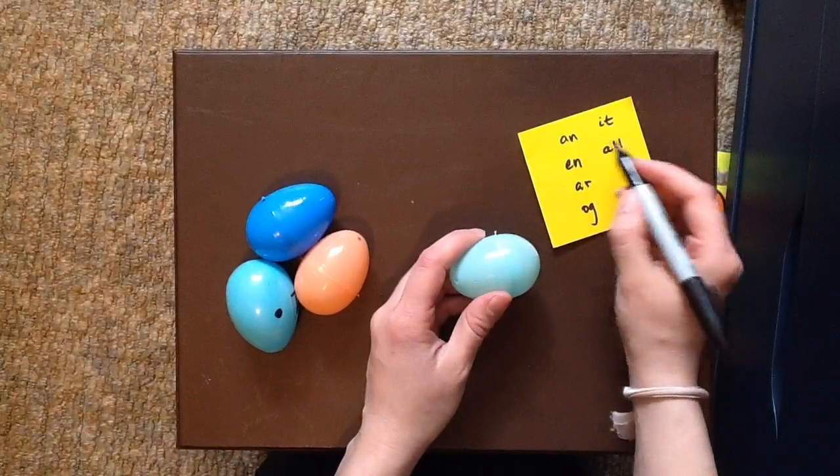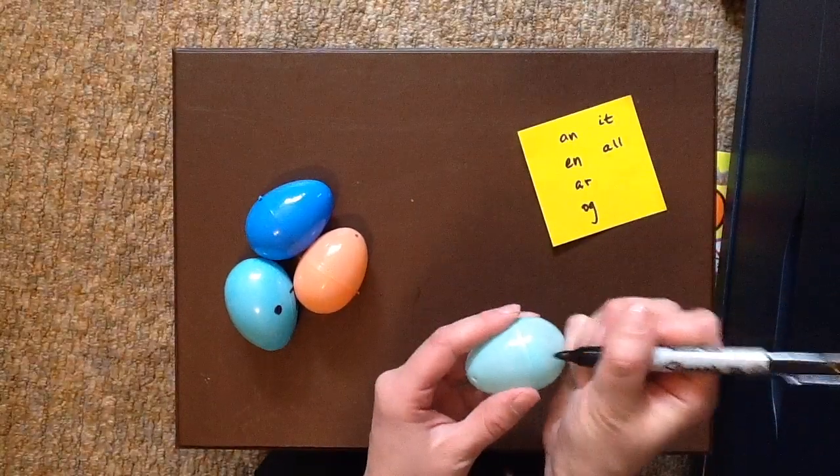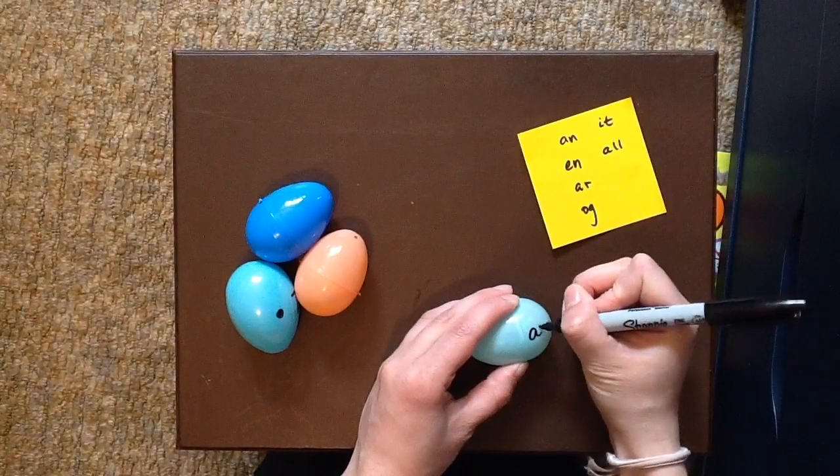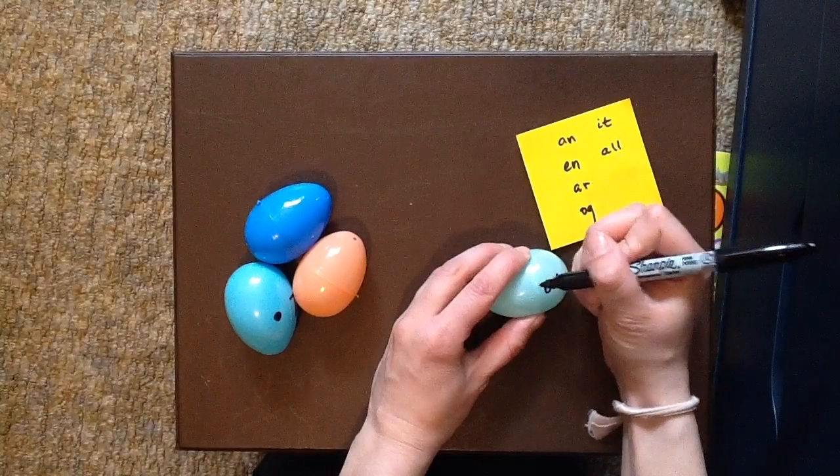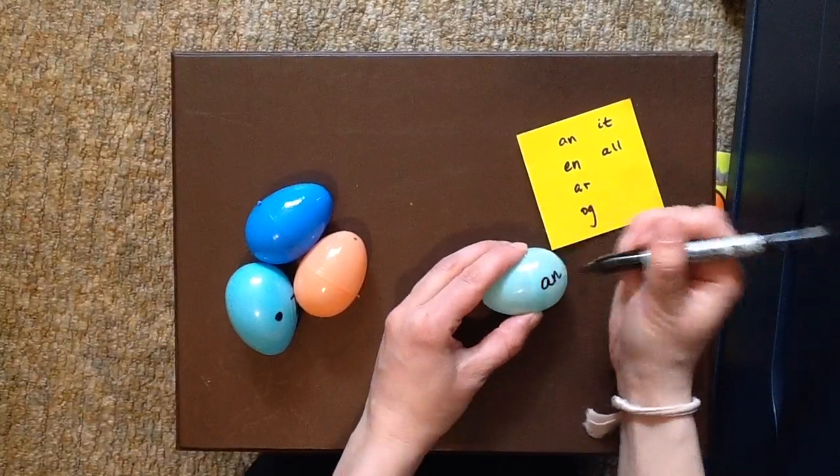I'm going to start with A-M and I'm going to write that here on this half. Then on the other half of the egg I'm going to think of all the words that I can make. So I know that...